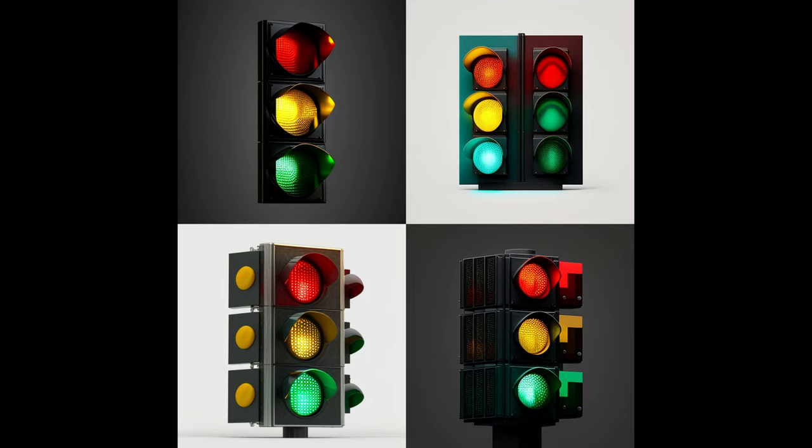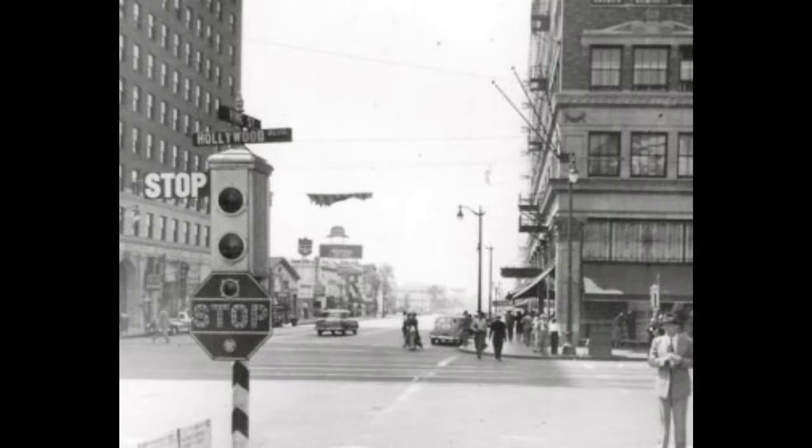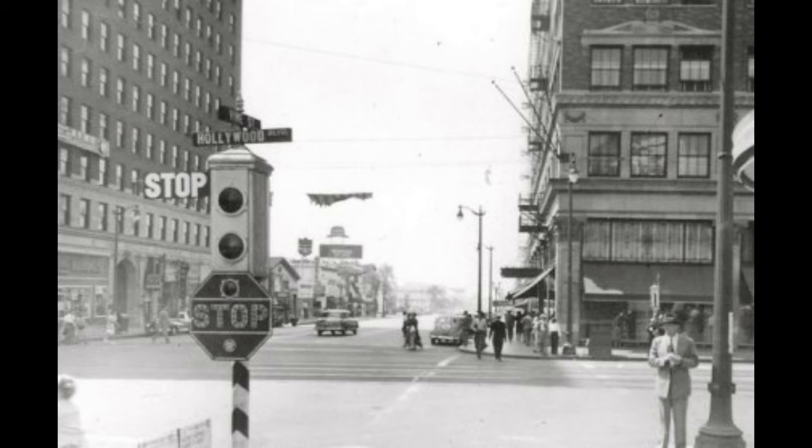Did you know that the first illuminated traffic signal was installed way back in 1868 in London, England? It had two gas lamps — red and green — and semaphore arms on a pole. Sadly, it exploded shortly after its installation, killing a policeman.